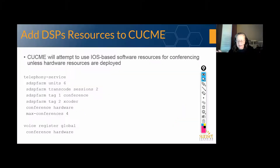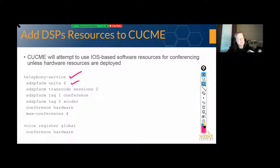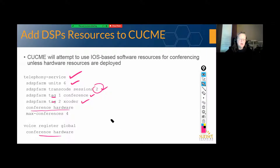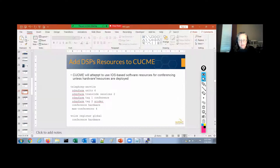Here is the CUCME part. We'll go into telephony service. How many of our DSP resources are going to be able to register to this telephony process? If you have local transcode resources registering to a CUBE, you're going to want to limit how many of those resources can be allocated to the CUCME process. Max transcode sessions should match what is in the profile we created, then tags for our conference and transcoder. Conference hardware — by default, Call Manager Express for both skinny and SIP is going to use software conferencing unless we tell it we have conference hardware available. And then max conferences should match something in the general vicinity of your profile.